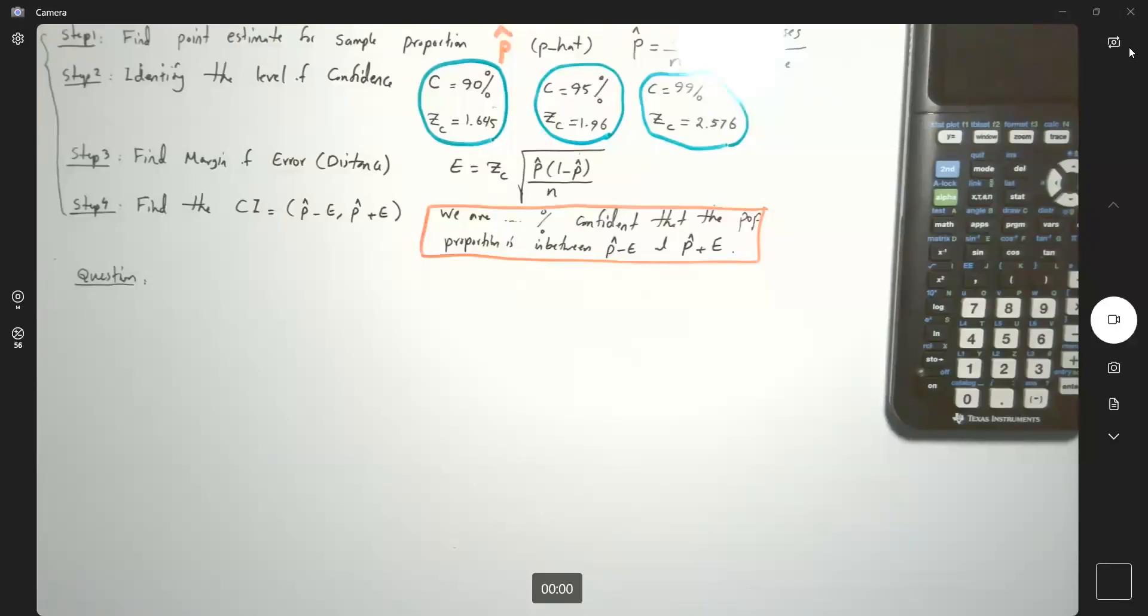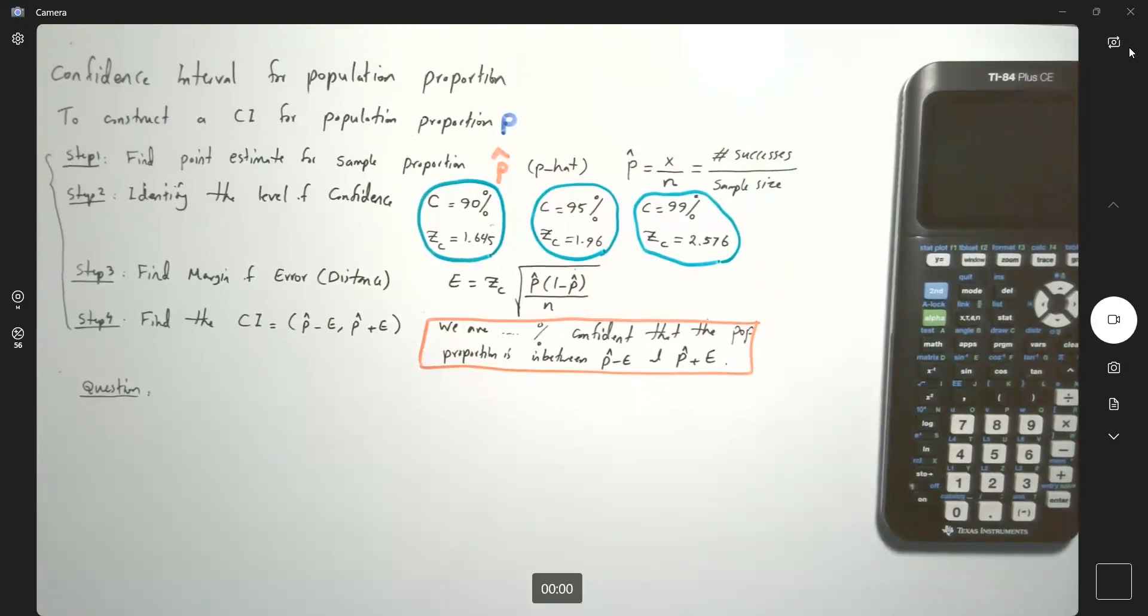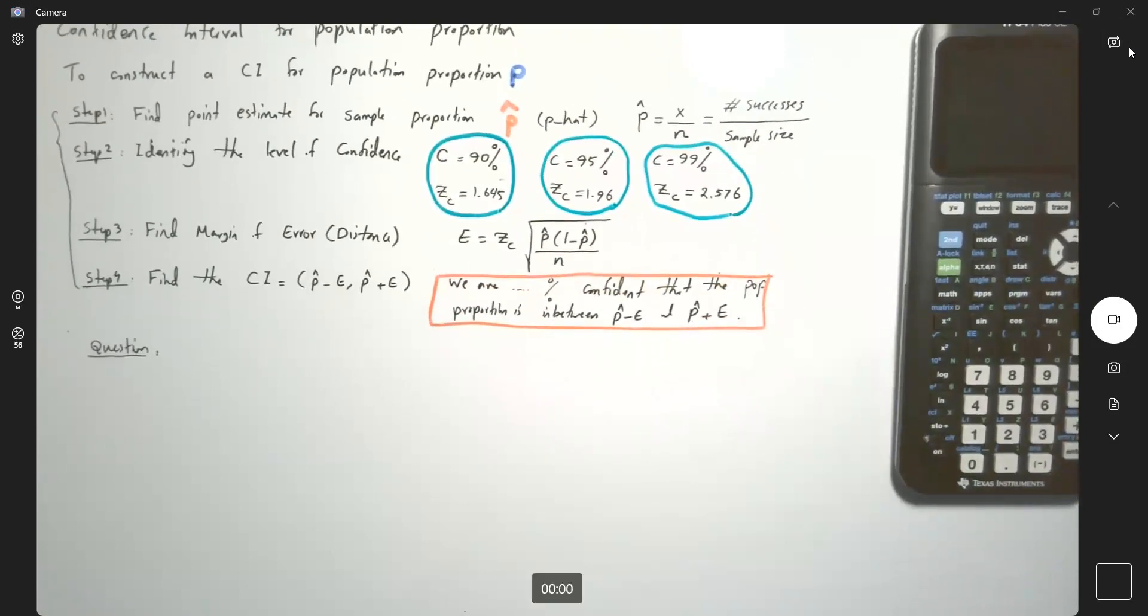We are constructing a confidence interval for population proportion. In this example,